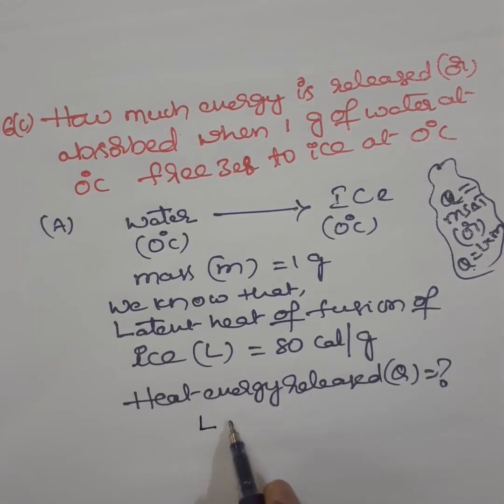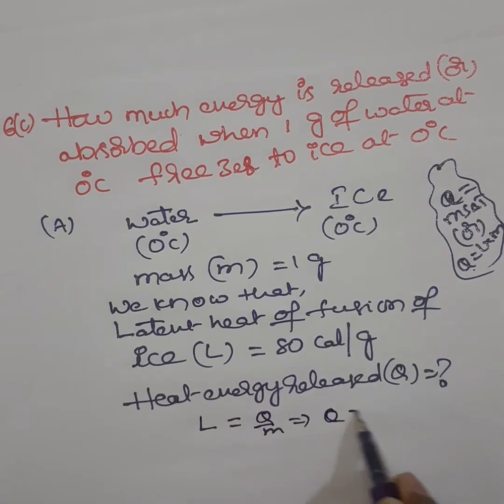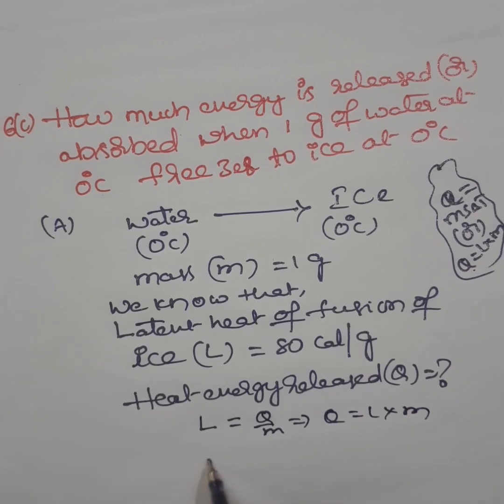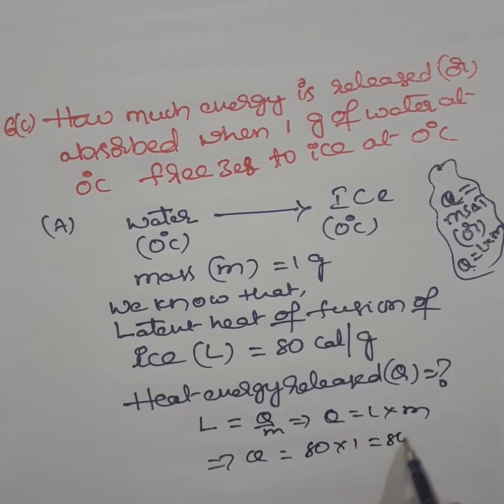We know the formula for latent heat of fusion: L equals Q by M. This implies Q equals L into M. So then Q equals L value 80, M value 1, then it is 80 calories.